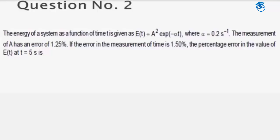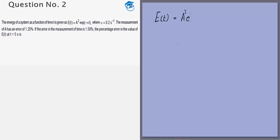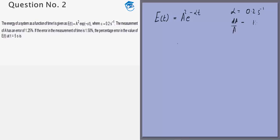In this question we are given the energy as a function of time of a system is A squared e to the power minus alpha t where alpha is given to us to be 0.2 per second. We are given the percentage error in A as 1.25 percent. We are given the percentage error in T as 1.5 percent.